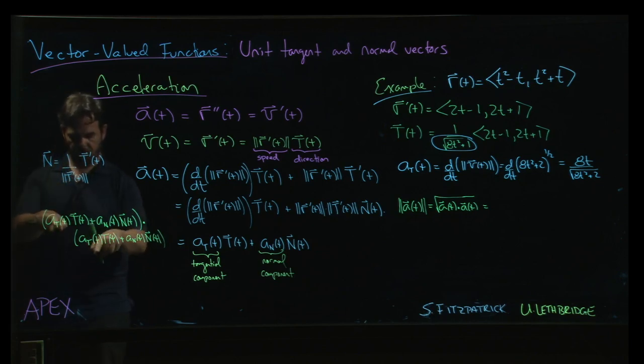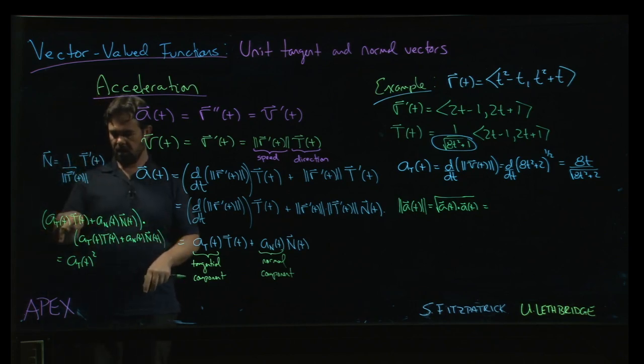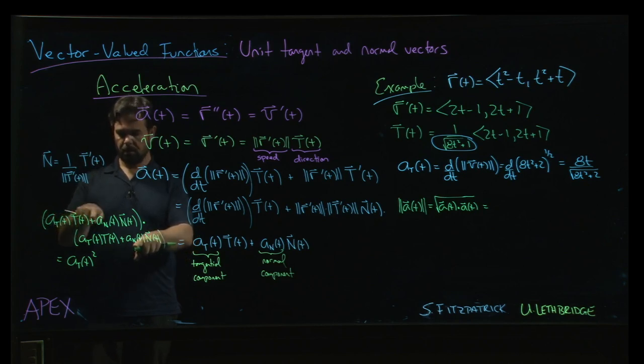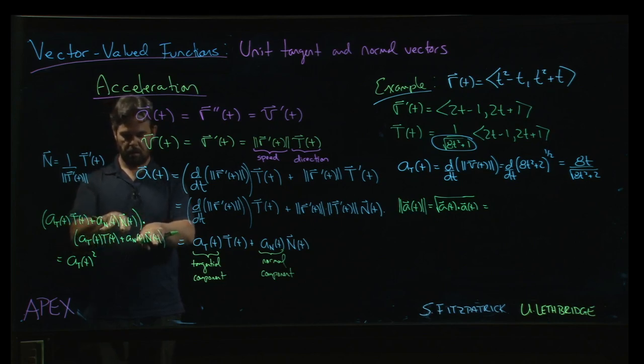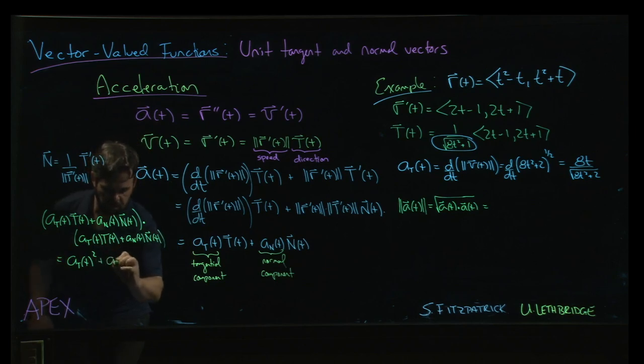And so the first one we're going to get, well, we get aₜ², the tangential component squared. T·T, but T·T is one because it's a unit vector. Then we're going to get tangential component times normal component, but then T·N, they are orthogonal, so that dot product is zero. Then we'd get this dot product, which is again zero, because T and N are orthogonal. And then we're going to get the dot product here, which is just aₙ(t) times aₙ(t), and then N·N, but again N·N is one, because N is a normal vector.